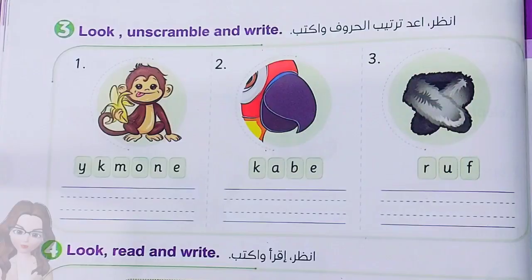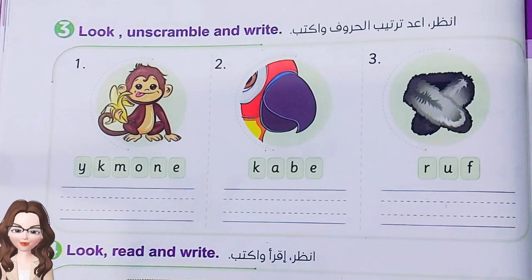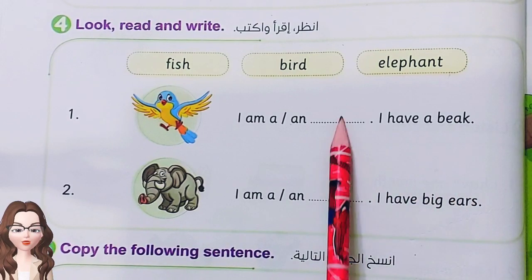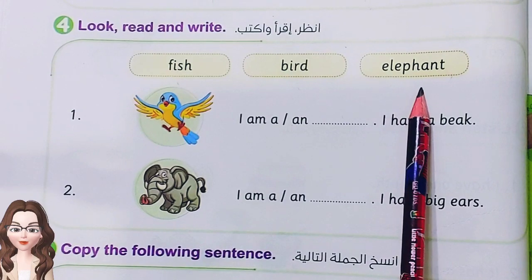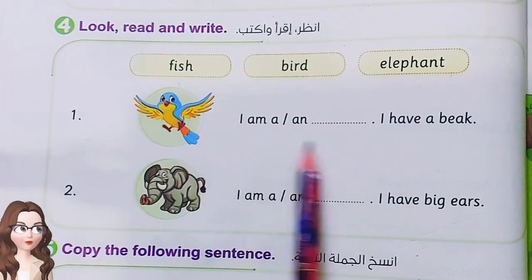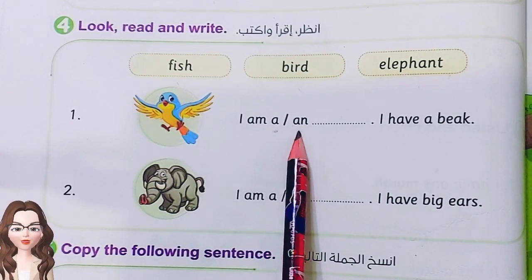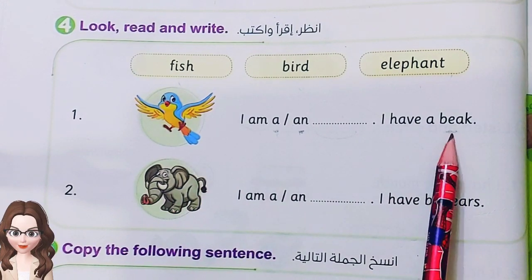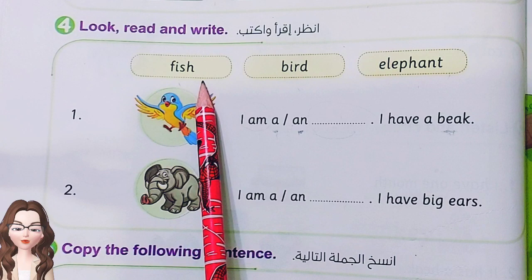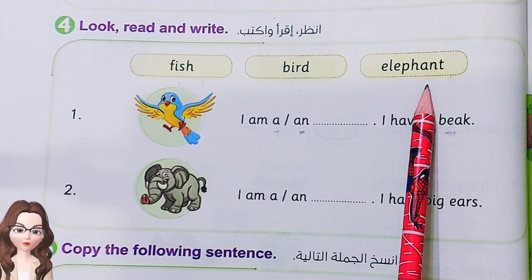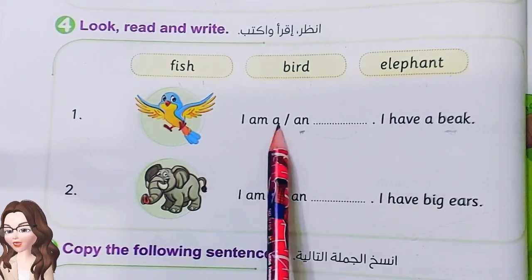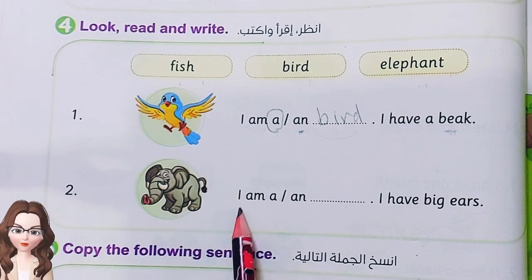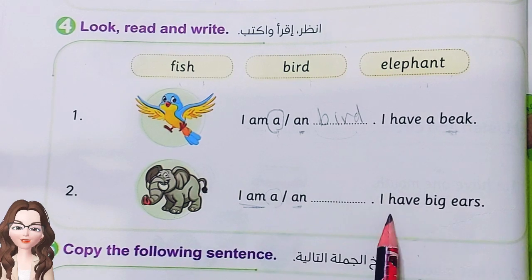بعد ما تحفظ الكلمات هتقدر ترتب الحروف دي وتطلع منها الكلمة الصحيحة. Look, read and write. Read these words and write the suitable word for each sentence: fish, bird, elephant. Number 1 — look at this picture and read the sentence. I am a or an? I have a beak — what is this? It's a bird! I am a bird.